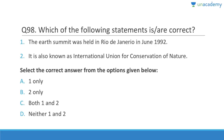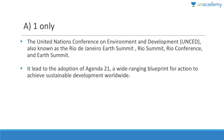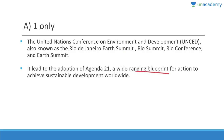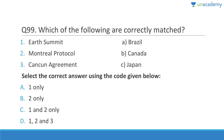Question 98: The Earth Summit was held in Rio de Janeiro in June 1992 — correct. It is also known as IUCN — no, IUCN is a completely different organization. Answer is A, 1 only. UNCED, the United Nations Conference on Environment and Development, is also called the Rio Summit or Rio de Janeiro Summit, and resulted in the adoption of Agenda 21, a wide-ranging blueprint for action to achieve sustainable development worldwide.